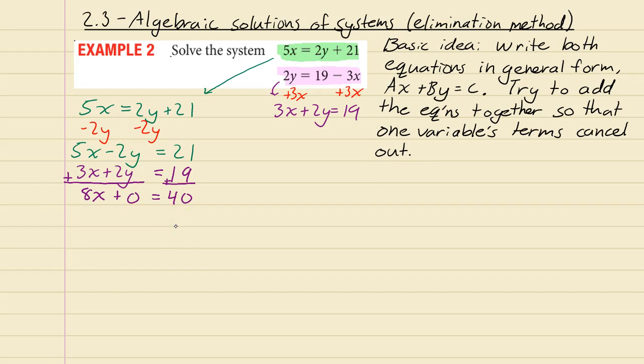Sometimes you don't have it so easy. This was a basic example. Sometimes you might have to do something to both sides to get them to cancel out—you might have to multiply both sides by something if you don't have them as opposites. But let's just finish this one up. That means divide both sides by 8 to get x by itself, and that gives you x equals 40 divided by 8, which is 5.